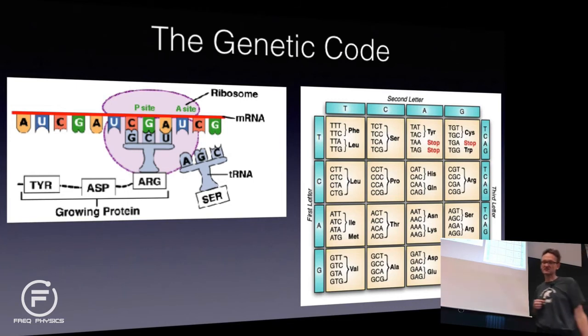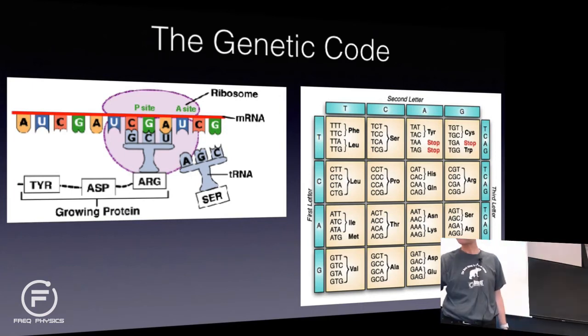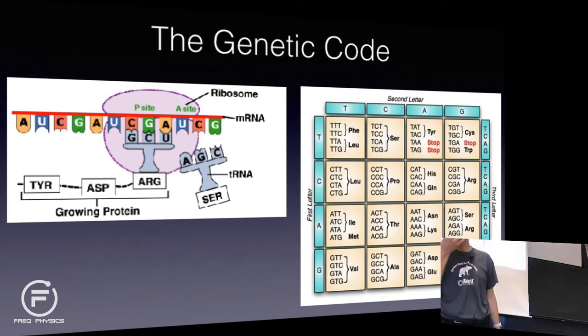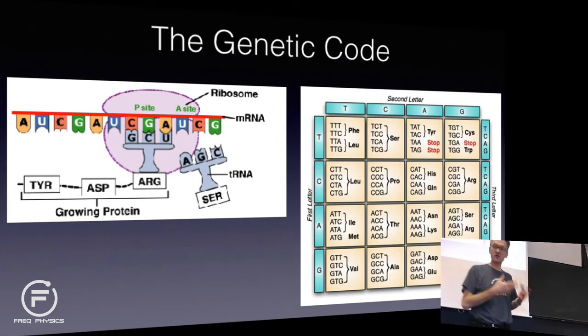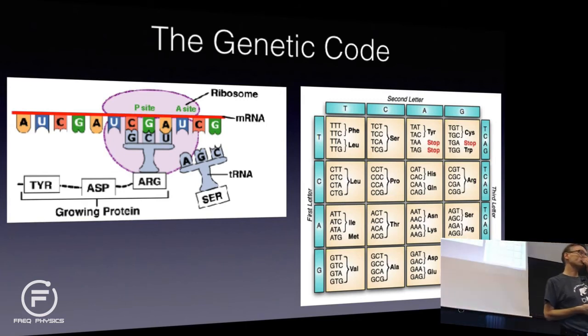Let's compare this with LEGO: the relative distribution of all LEGO pieces produced by LEGO Inc. is one thing; the LEGO pieces you use for a particular build is a different matter. Those are the building blocks that are available, and the relative abundance of them in nature is determined by the genetic code — Francis Crick's discovery.